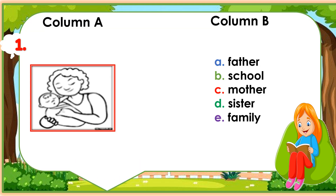Number 1: Look at this picture. What's this? Match this picture with a correct word in column B. A. Father. B. School. C. Mother. D. Sister. E. Family. Write the letter only.